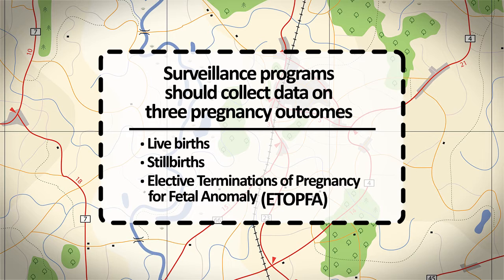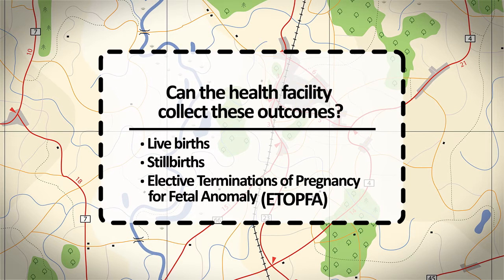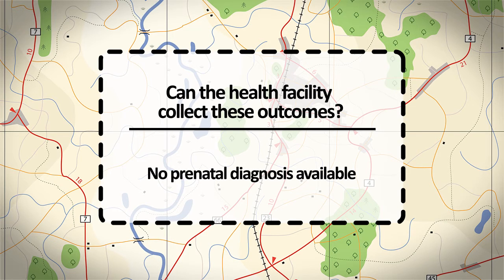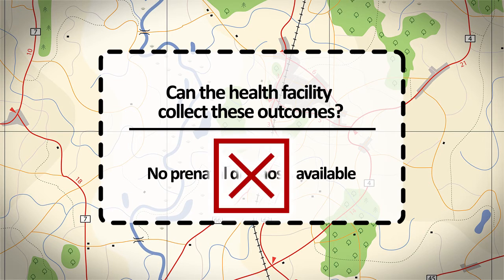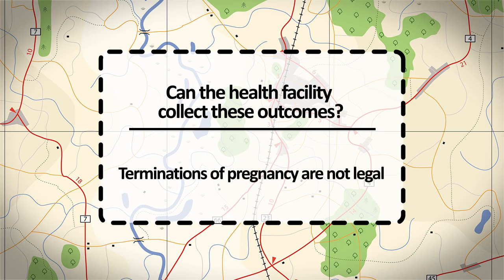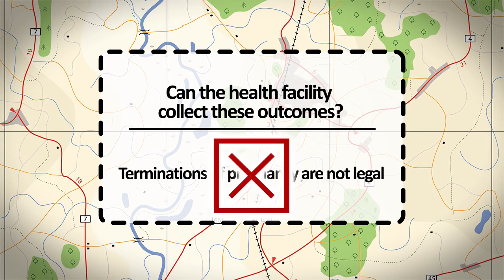The ability to collect these pregnancy outcomes is based on the capacity of the health facility. For example, if a hospital does not have prenatal diagnosis available, identifying a fetus affected with a birth defect will not be possible. Further, if terminations of pregnancy are not legal in a country, it will be difficult or impossible to collect elective terminations of pregnancy for fetal anomaly.